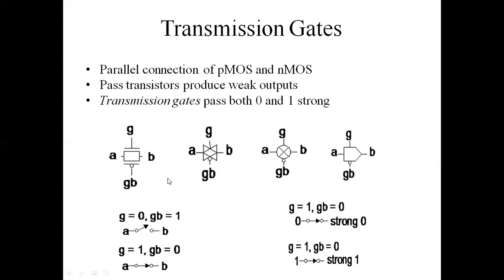Now we'll see the working of the transmission gate. When we apply G equals zero, GB becomes one. Since the controlling signal for NMOS is zero it turns off, and PMOS also turns off, so the switch acts as an open switch. When we reverse the condition and apply G equals one, GB becomes zero, and both transistors are conducting, so the switch becomes a closed switch.